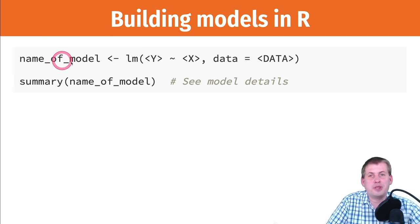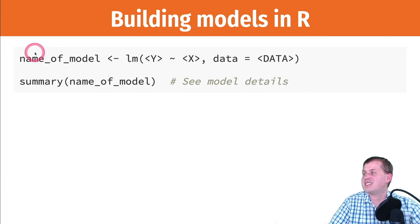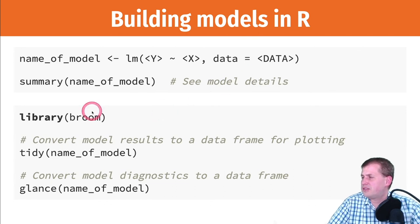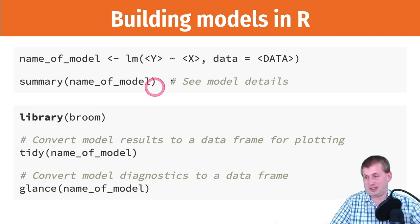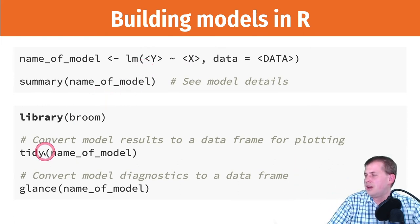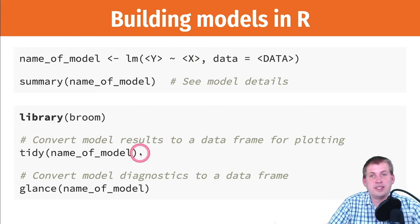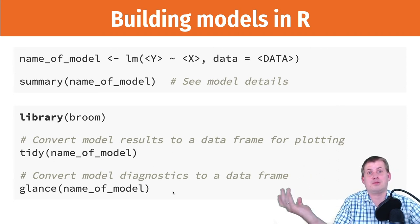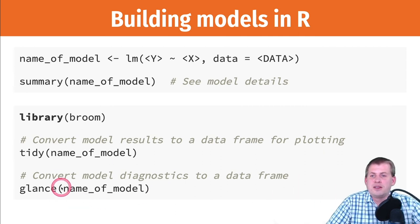Store the output using an arrow: name_of_model <- lm(y ~ x, data = ...). Then you can do stuff with it. Running summary() shows model details, but I prefer the broom package, which converts models into data frames with rows and columns. tidy() converts model results into a data set; glance() converts model diagnostics — like R-squared, AIC, BIC — into a data set.